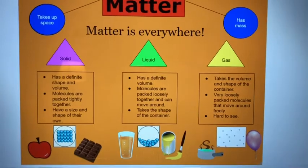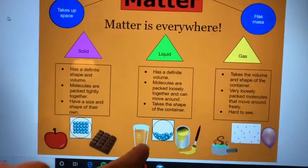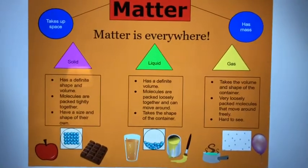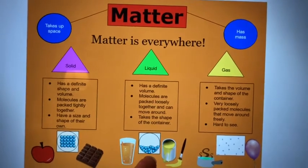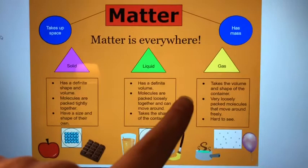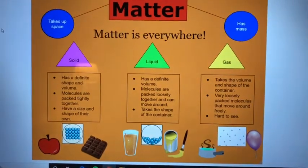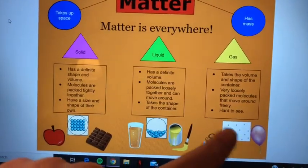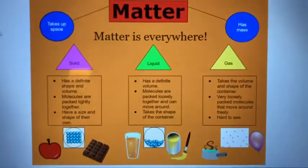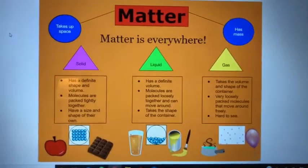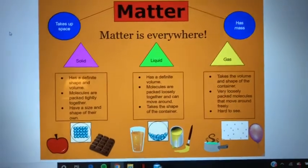For liquid, it has a definite volume, molecules are packed loosely together and can move around, and liquids take the shape of their container. We have some orange juice, orange soda, and paint as examples of liquids, and an image of what the molecules would look like moving around. For gas, it takes the volume and shape of the container, with very loosely packed molecules that move around freely, and gases are hard to see. We have an example of what the molecules look like in a gas, along with a balloon and some steam coming off of something cooking. This is just a visual to help understand everything covered in the video.